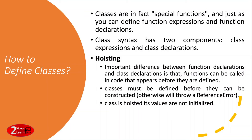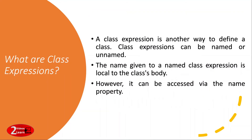This is how hoisting works for classes. We also have class expressions and class declarations — in this example we are looking at class expressions. A class expression is another way to define a class apart from a class declaration. Class expressions can be named or unnamed. The name given to a named class expression is local to the class body, however it can be accessed via the name property.